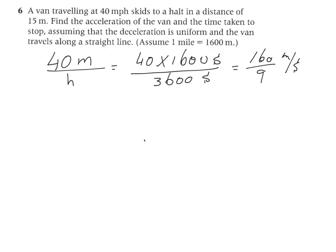The speed, the initial velocity, so u of that van, is 160 over 9. And then it's decelerating until it stops. So its final velocity, v, is going to equal to 0. And it takes him 15 meters to stop. So s equals 15.